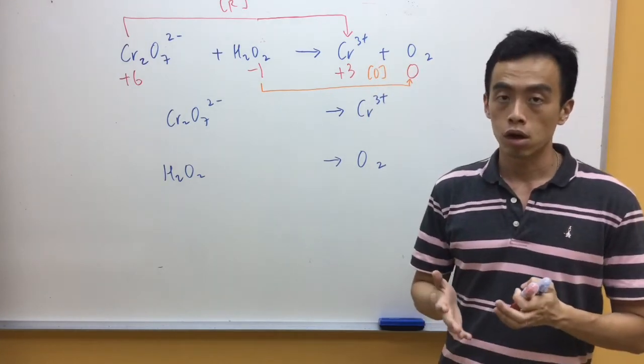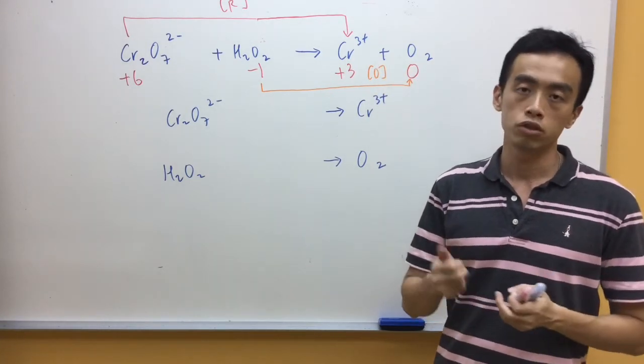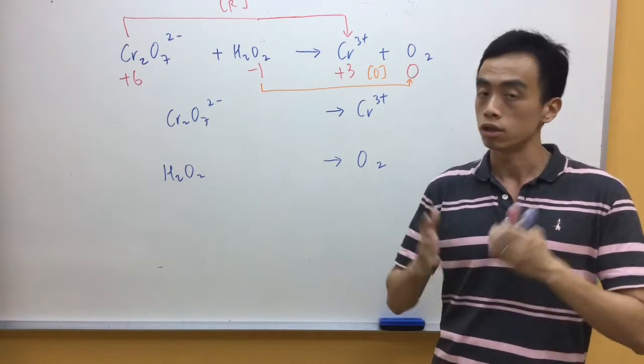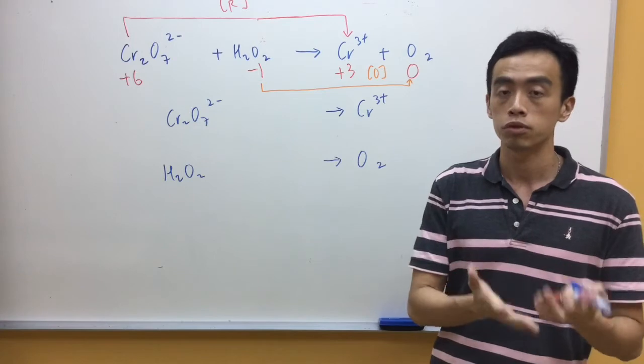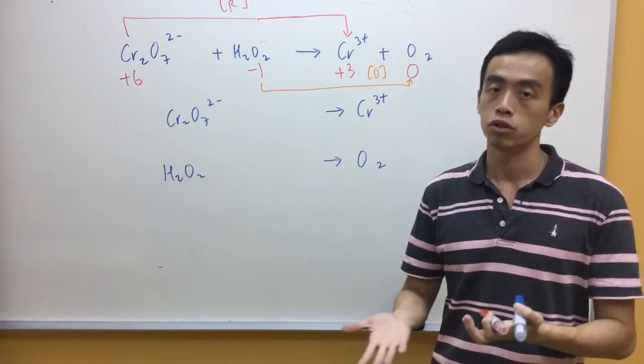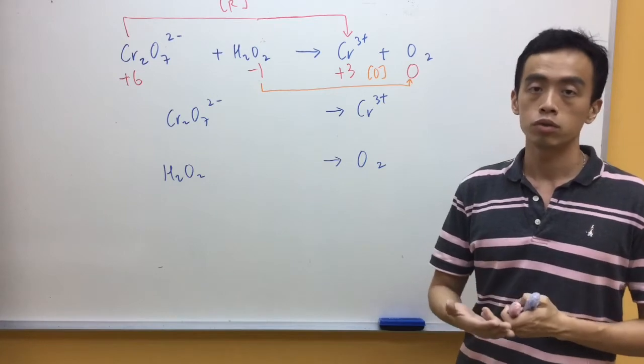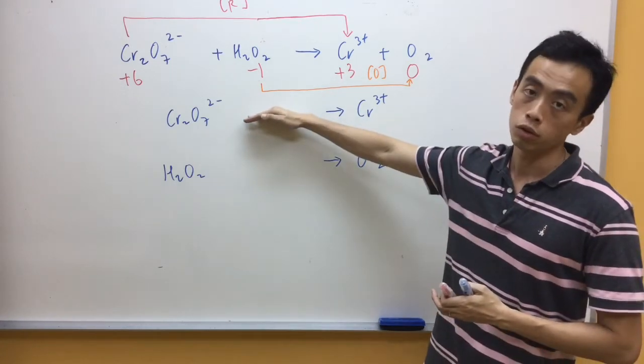Now what is important for us to take note of is for redox reaction, one species must undergo oxidation and one species must undergo reduction. So it is not possible for us to have both species reduced or both species oxidized. Now that we're determining who is oxidized and reduced, we can balance each of these half equations independently.